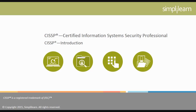CISSP was the first credential in the field of information security to meet the stringent requirements of ISO IEC Standard 17024. In June 2004, the CISSP became the first information security credential accredited by ANSI ISO IEC Standard 17024:2003 accreditation.